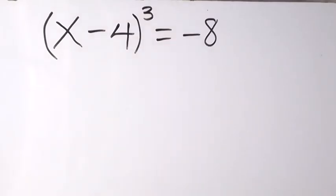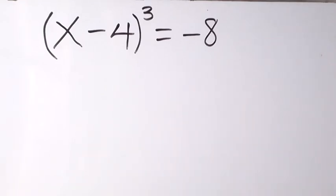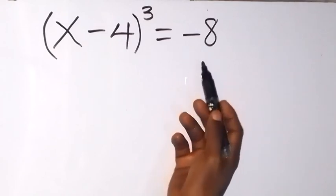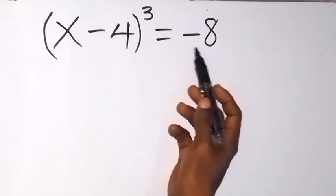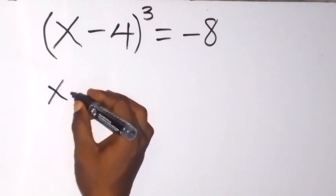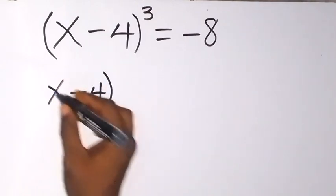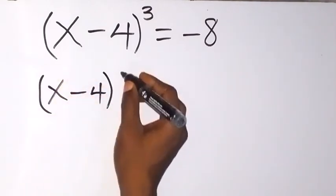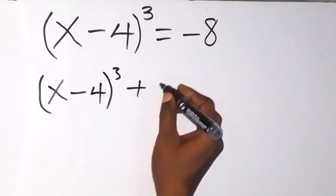Welcome to this class, and thank you for joining us. We want to solve this problem: finding the value of x in (x minus 4) raised to power 3, equals minus 8. From here, let's take this minus 8 to this side, so we have (x minus 4) raised to power 3 plus 8 equals zero.